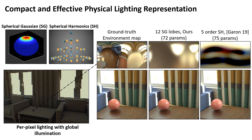Therefore, we use spatially varying spherical Gaussians as a concise approximation. We show that it can better preserve high-frequency information compared to the spherical harmonics used in prior works.